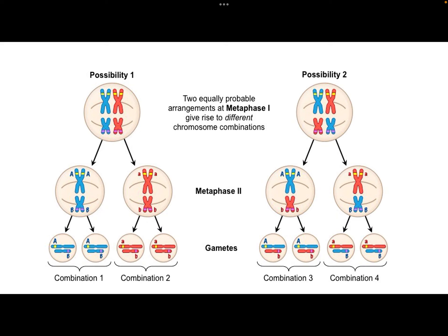One possibility is where the chromosomes line up during meiosis I with the mother's chromosomes on the left side and the father's chromosomes on the right side. After that split, we end up with one daughter cell that has only maternal chromosomes and one that has only paternal chromosomes. Our resulting four daughter cells will have two with all paternal chromosomes and two with all maternal chromosomes. We're using capital letters for one allele and lowercase for another, looking at two genes, one on each chromosome.